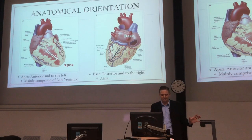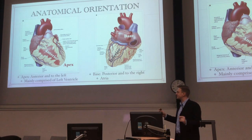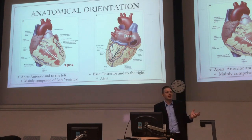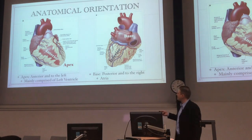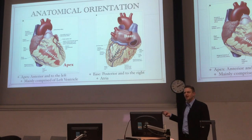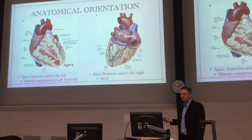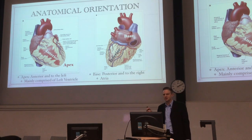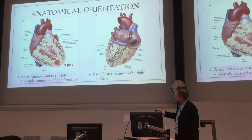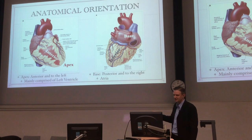But this is a lecture on anatomy, so first we have to talk about some features of the heart. To orient us, we'll talk about where the heart lies in the chest and its major features. Let's start with the apex — that little bit down here. It's anterior and to the left, which is where you get the apex beat on the stethoscope. It's mainly left ventricle — mainly the muscle mass of the left ventricle — with just a little bit of right ventricle as well.